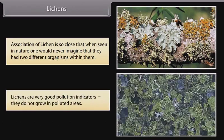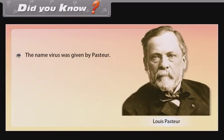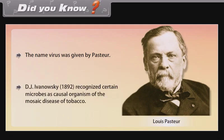Lichens are very good pollution indicators — they do not grow in polluted areas. The name 'virus' was given by Pasteur. D.J. Ivanovsky in 1892 recognized certain microbes as the causal organisms of the mosaic disease of tobacco.